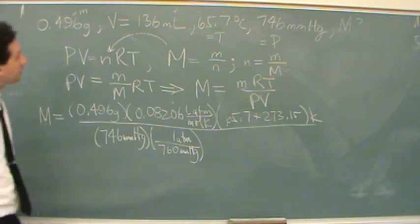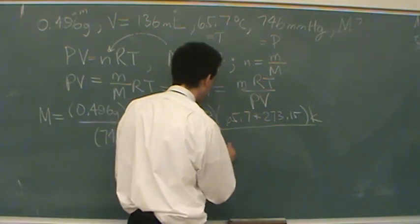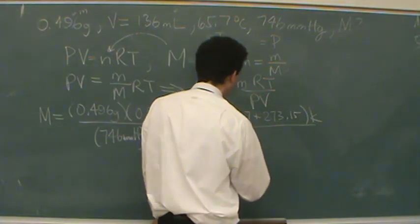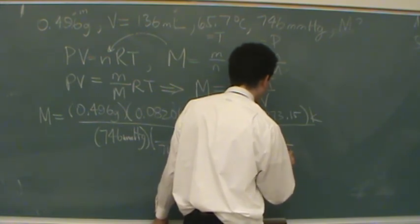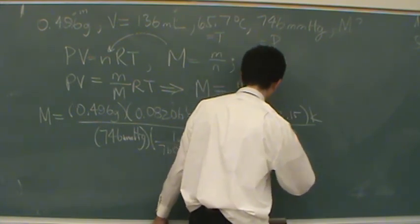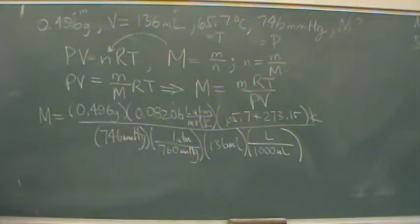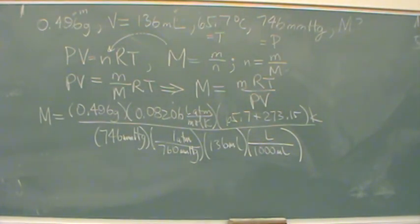Now we've got to do volume. It's 136 milliliters. But I want to change this to liters. Again, follow our gas law constant. If you do that calculation, you'll have M. Is that okay? Yeah.